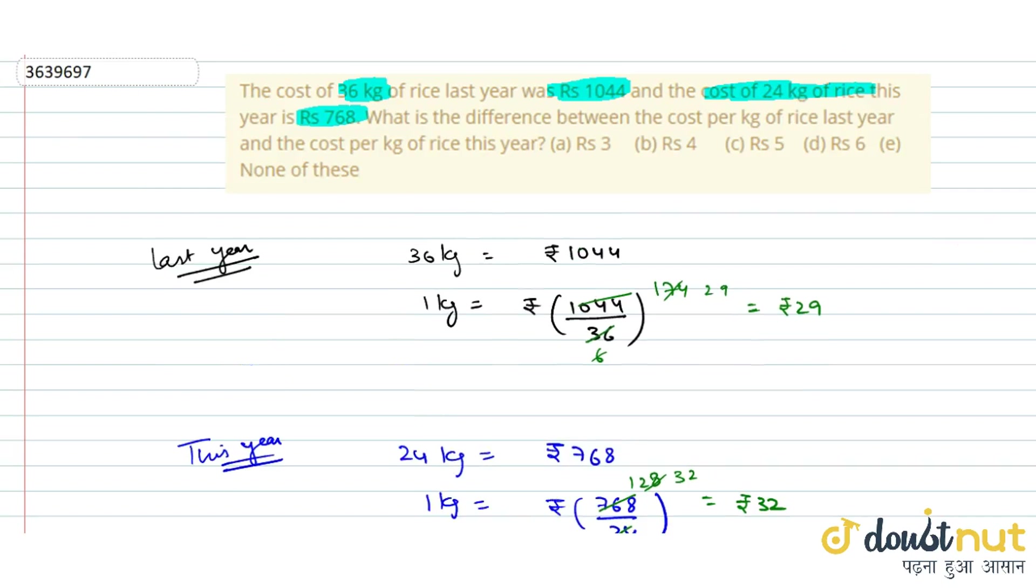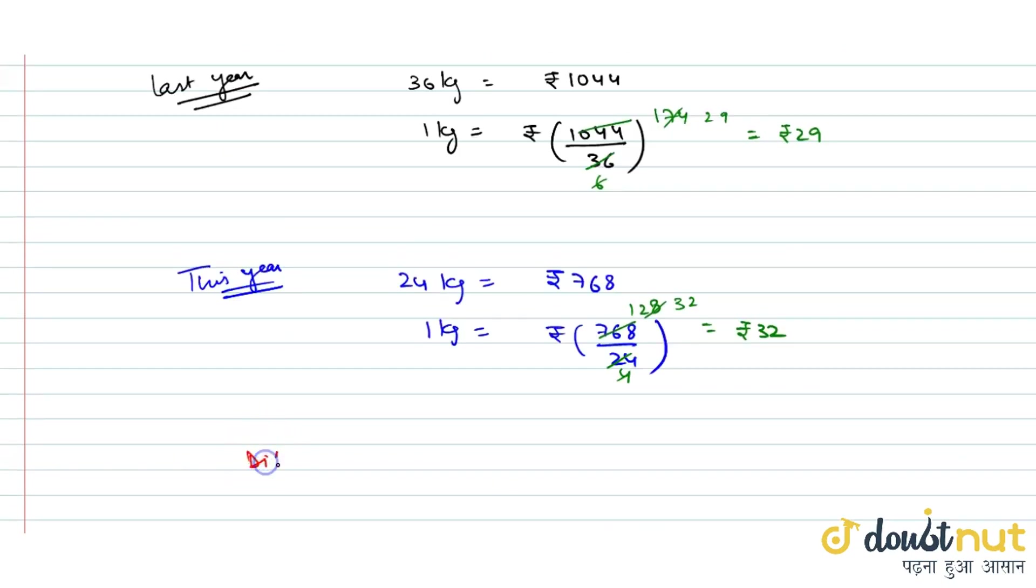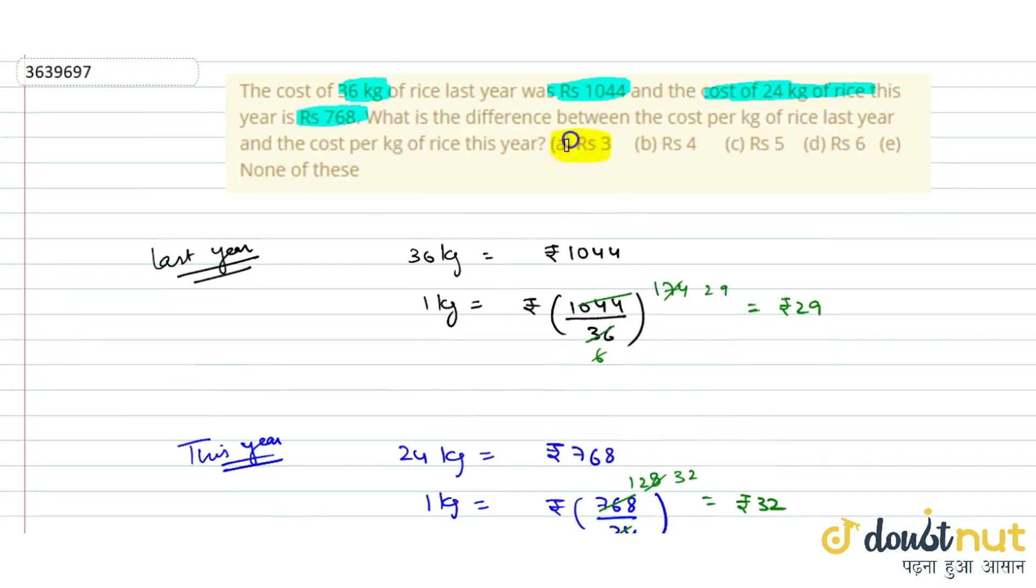Now we find the difference between last year and this year. The difference is Rs. 32 minus Rs. 29, which equals Rs. 3. So this is our required answer. Option A is the correct answer.